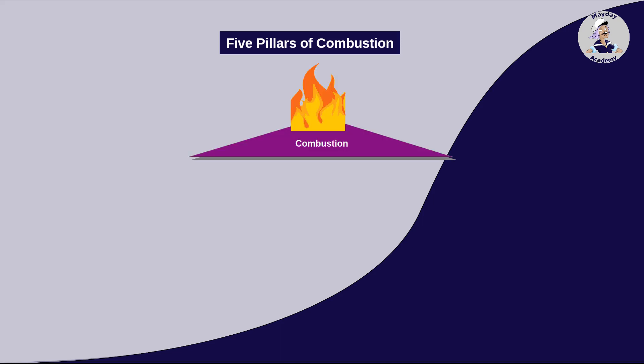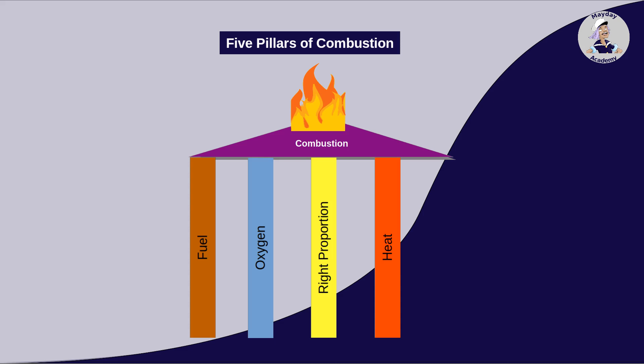There must be a mixture of fuel vapor and air in the correct ratio. The material must be heated to a temperature at which combustion can occur, the so-called ignition temperature. Once the fire is burning, it gives off heat and provides the activation energy for further combustion itself. A chain reaction occurs, eliminating the need for additional energy input.